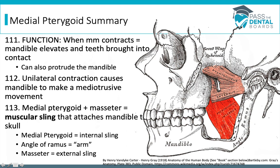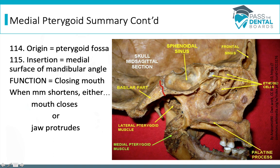The medial pterygoid originates on the pterygoid fossa. Much like the masseter, the insertion is going to be on the medial surface — as opposed to the lateral surface — but it inserts on the same spot on the mandibular angle.